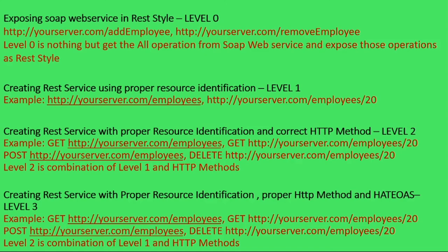Whenever you retrieve that post, you want to retrieve information related to that post. Level 3 is not only dealing with manipulating a resource like view, delete, or update — apart from manipulation, Level 3 brings some additional information related to that particular resource. In the case of Facebook, when I post a message, whenever I retrieve that post, it also retrieves how many people liked it and how many people shared it. That is related to the post. If you want to implement such an operation, we use Level 3, which uses proper resource identification, proper HTTP method, and retrieves related information for that particular resource.